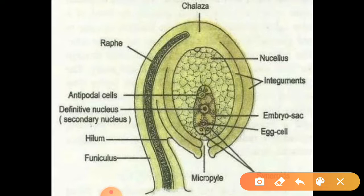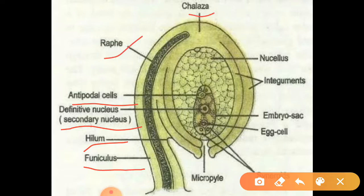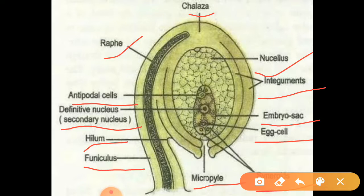An anatropous ovule consists of the following parts: funiculus, hilum, secondary nucleus, antipodal cell, raphe, chalaza, nucellus, integuments, embryo sac, egg cell, synergid, and micropyle. All these are the parts of an anatropous ovule.